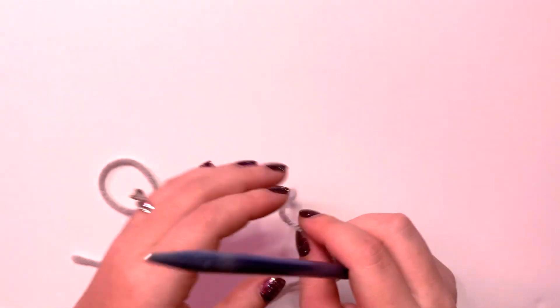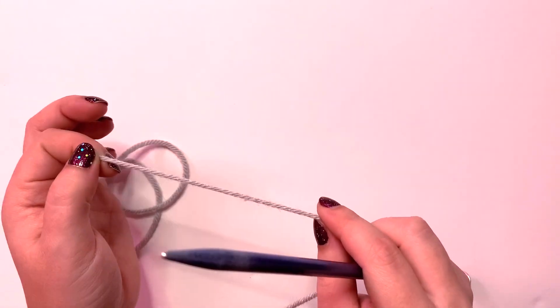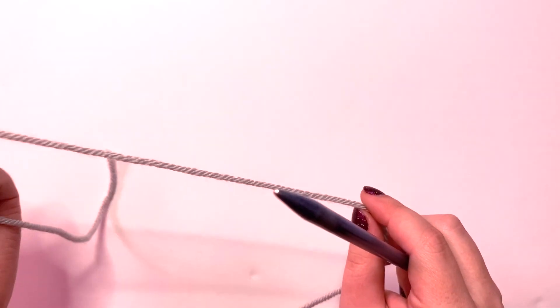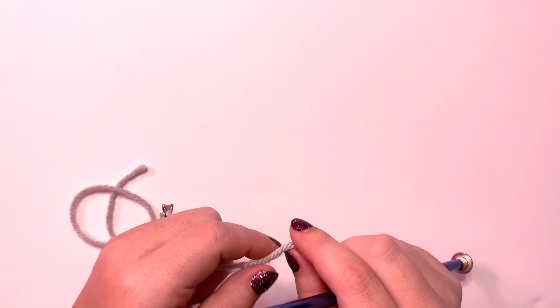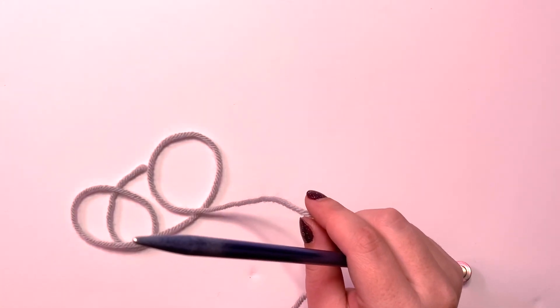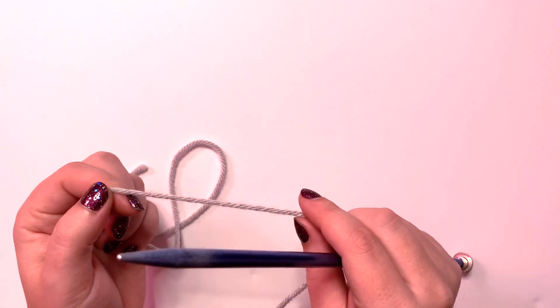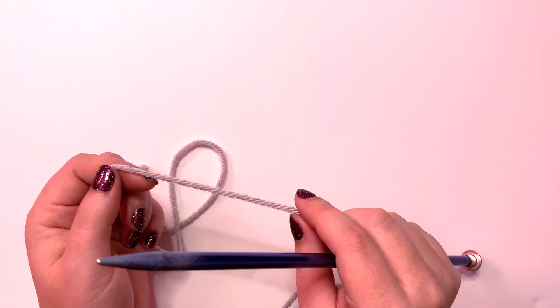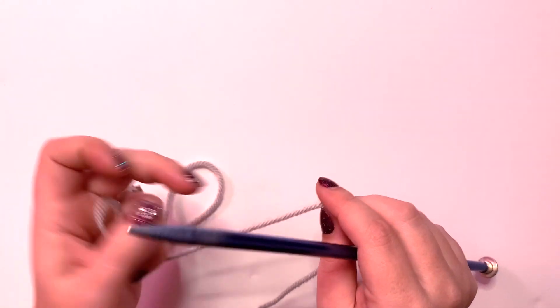I personally use a long tail cast on that doesn't have a knot in it. Part of the reason for that is when you have something that's a seamless project or even not a seamless project, the knot just kind of ruins the aesthetic of the end in my opinion. So I'm going to show you how to do it without a knot.